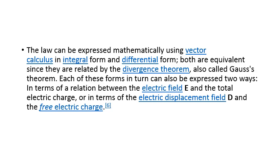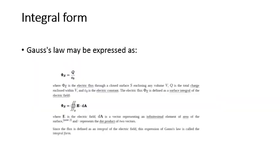The integral and differential forms are equivalent since they are related by the divergence theorem. We may know from previous lectures some theorems — the Stokes theorem, the divergence theorem, and the Green's theorem. These theorems, also called Gauss theorem, allow each form to be expressed in two ways: in terms of the relation between electric field and total electric charge, or in terms of electric displacement and free electric charge. This law can also be expressed in various forms.